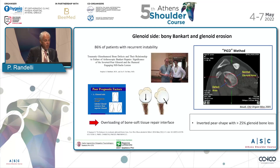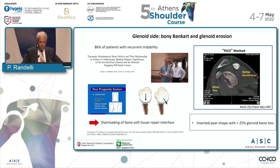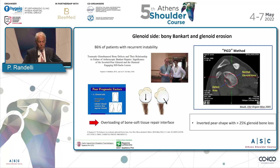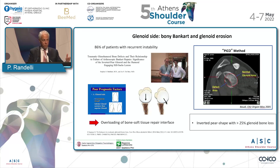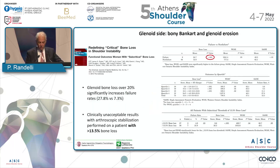Regarding the glenoid bone loss, we are all aware of that. Steve Burkhart teaches us that glenoid bone loss is a huge bad prognostic factor, and we have an overloading of the bone-tissue repair interface with failure at the end of the day. That's why it's very important to do a CT scan to evaluate our patient. And we have this inverted pear if we have more than 25% of glenoid bone loss.